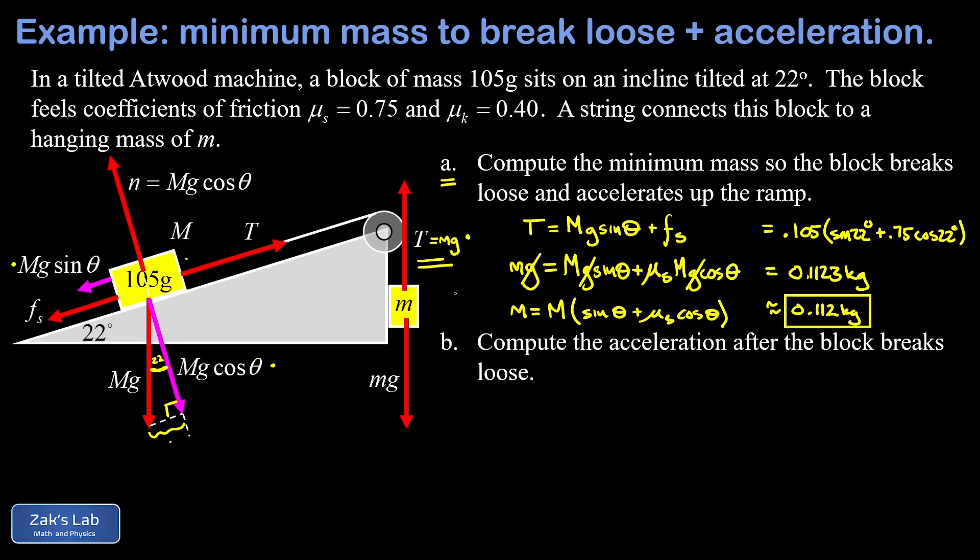So suppose we hang this mass of 0.1123 kilograms off the end of the string. Everything is going to stay static if it's perfectly balanced. But if we give it a tap of even one billionth of a newton, this thing is going to break loose and begin accelerating up the ramp. The friction force drops to a significantly lower value with a coefficient of 0.40, and we get a net force on this block up the ramp, and it just takes off with an acceleration.